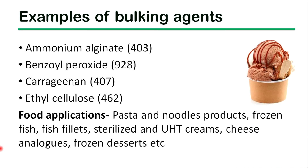Ammonium alginate, benzoyl peroxide, carrageenan, and ethyl cellulose are some examples of bulking agents. Pasta and noodle products, frozen fish, fish fillets, sterilized and UHT creams, cheese analogues, and frozen emulsified products use bulking agents during their processing.